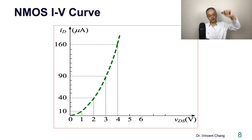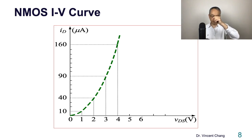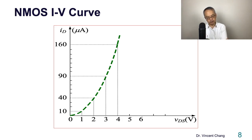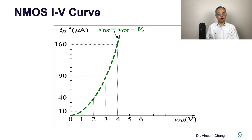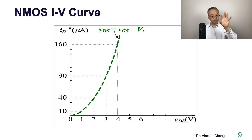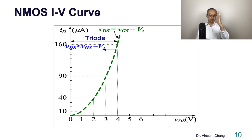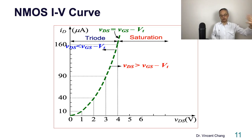First, you put a boundary between triode and saturation. This boundary is a parabola — we're going to prove this parabola when we move on to future lecture videos. This boundary equation: remember, VDS equals overdrive, which is defined as VGS minus VT. On the left-hand side is triode, where VDS is smaller than overdrive; on the right-hand side is saturation, where VDS is greater than overdrive.